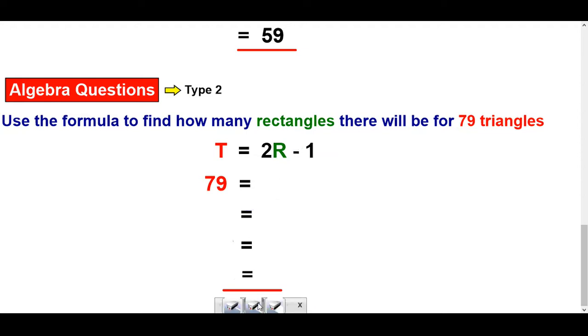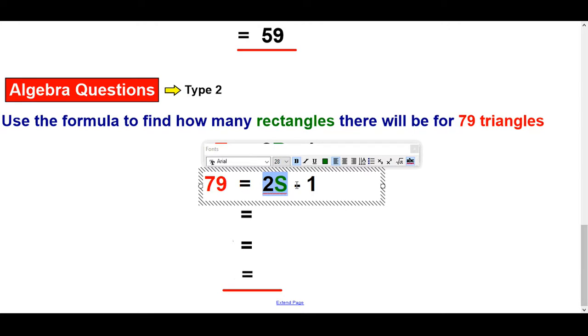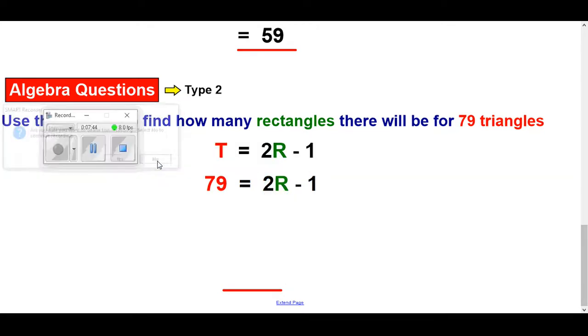Let's just change that to R. It might be R's in the rest of it as well. Or S's, sorry. I'll just pause that. Okay, I fixed it. Right, so 79 is equal to 2R take away one.